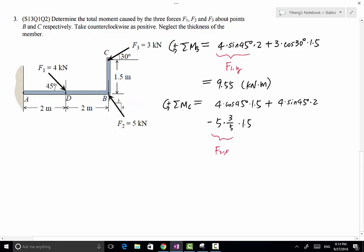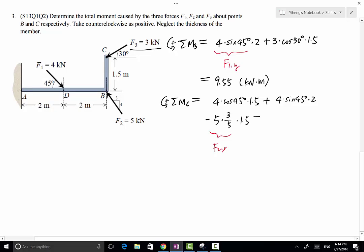Lastly, we have force F3. Its line of action passes through point C already, therefore it does not have any moment about point C. So we have evaluated all the moments about point C, and that equals 5.40 in the unit of kNm.